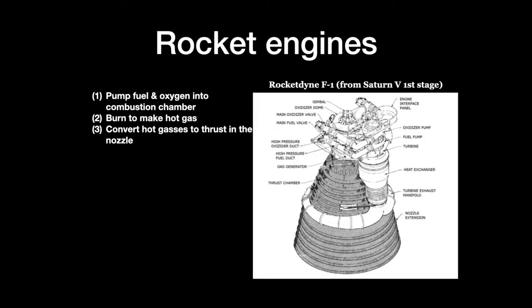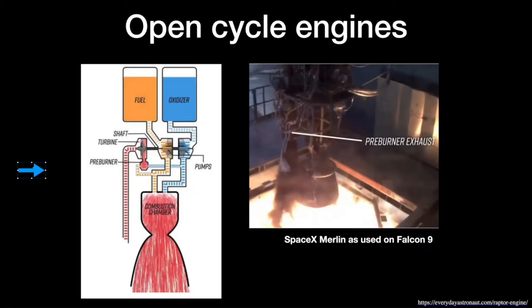Now let's take a deeper look at rocket engines. What are the three functions of rocket engines? First, they have to pump the fuel and oxygen into the combustion chamber. Second, they need to burn the fuel and oxygen to make hot gases. And third, they need to convert these hot gases into thrust, which they do inside the nozzle. The picture on the right shows the Rocketdyne F1 engine, which was the mighty engine that powered the first stage of the Saturn V rocket — the rocket that took the astronauts to the Moon.